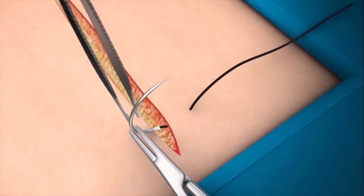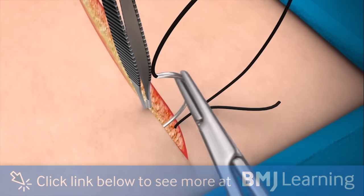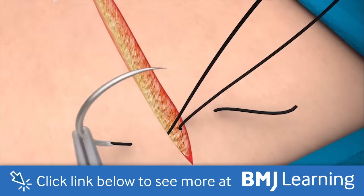Pick up the needle with the forceps and remount it on the needle holders in the correct position and pass it through the opposite wound edge, taking an equally sized bite.